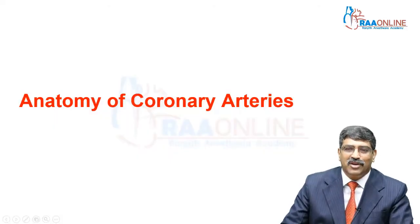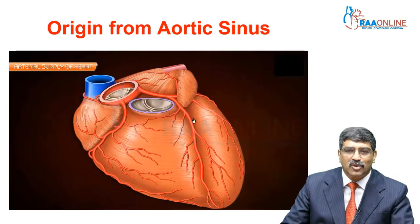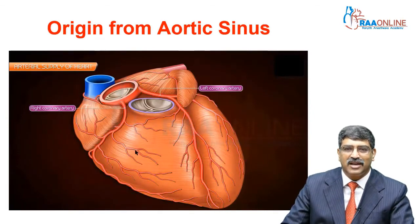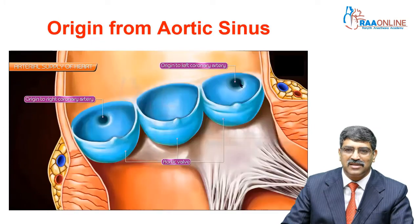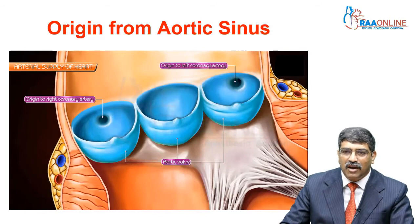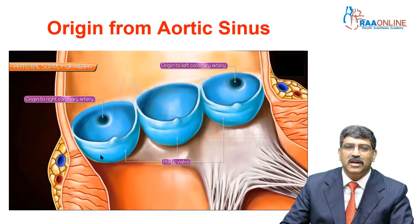Let us move to the anatomy of coronary arteries. There are two coronary arteries: the left coronary artery and the right coronary artery. The left coronary artery arises from the ascending aorta at the left aortic sinus, and the right coronary artery comes from the right aortic sinus.